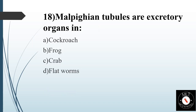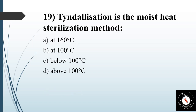Eighteenth question. Malpighian tubules are excretory organs in. Option A: Cockroach. Option B: Frog. Option C: Crab. Option D: Flatworms. Answer is Option A: Cockroach.